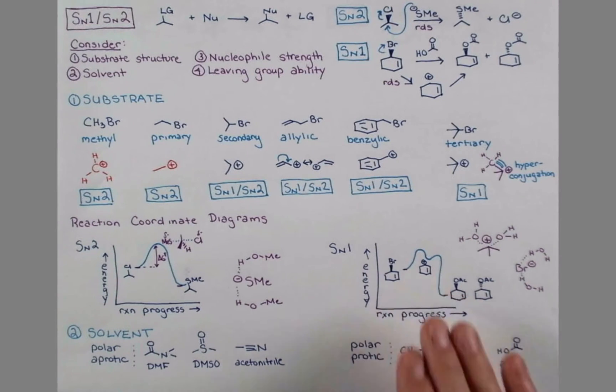The SN1 mechanism goes through a planar carbocation. The nucleophile can approach from either face, and we get a mixture of stereoisomers as products.